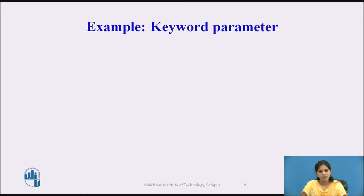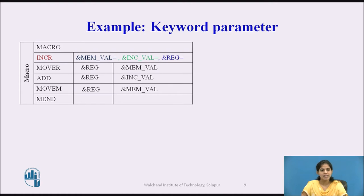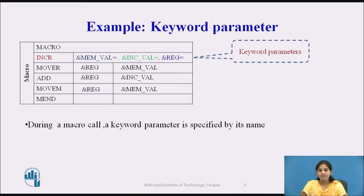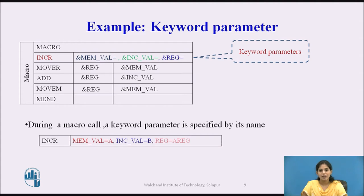Next we see an example of keyword parameters. This is the macro definition; the name of the macro is INCR. It has three keyword parameters: &MEMORY_VAL=, &INC_VAL=, and &REGISTER=. During the macro call, a keyword parameter is specified by its name. In the first micro call INCR, MEM_VAL=A, INC_VAL=B, REGISTER=A_REGISTER. In the keyword parameter, the actual value is assigned to the formal parameter by its name.